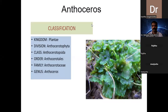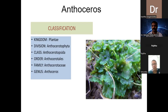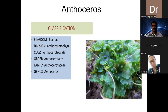Unlike Marcantia, which we studied in the previous class — those were called liverworts — these Anthoceros are commonly referred to as hornworts. The common name for Anthoceros is hornworts. The common name for Marcantia was liverworts. Anthoceros is called hornworts because of the sporophyte, which emerges out of the gametophyte and appears just like the horn of animals.